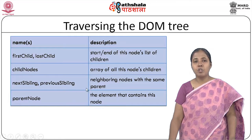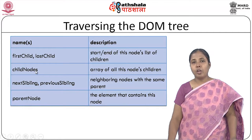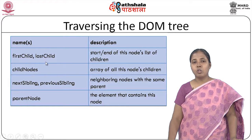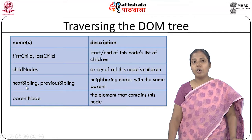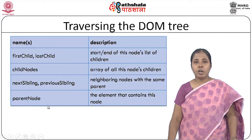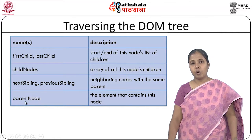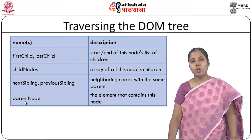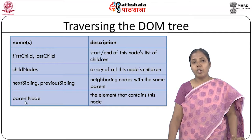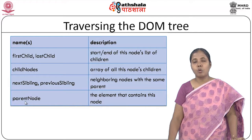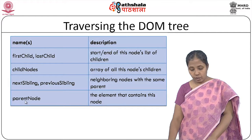To traverse the DOM tree, once you locate any HTML object you can take the firstChild, go to the lastChild, get the array of all children as childNodes, refer to neighboring nodes with the same parent as nextSibling or previousSibling, and take a parentNode. In this way you can traverse the entire DOM tree from any object.